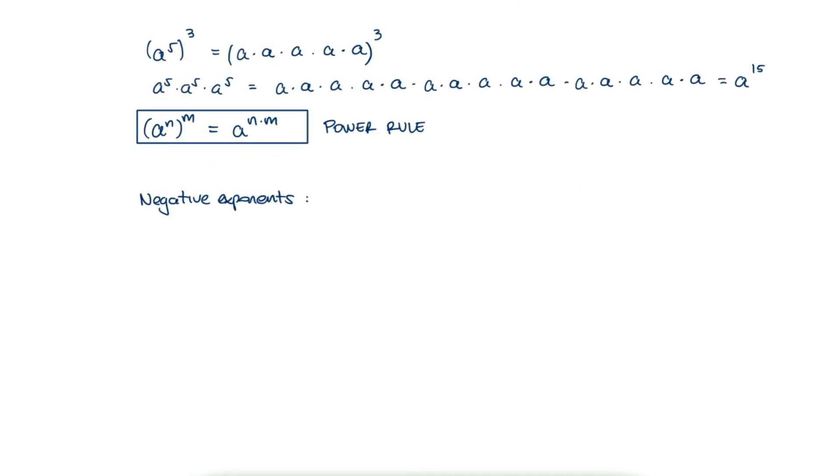Now, what about negative exponents? Well, since those could be written as zero minus the given number, we can use the quotient rule to say that a to the minus 4 is a to the zero over a to the 4. And what is a to the zero?